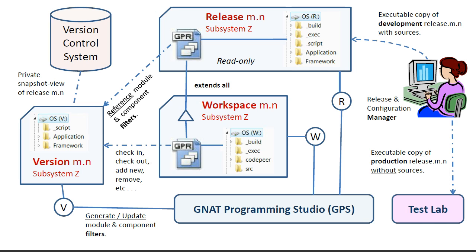Each workspace should have a source directory to serve as an area in which to either experiment or get around an issue which is blocking progress. The source directory allows us to hide units that exist on the release and version drives. This feature will be illustrated later in the tutorial.